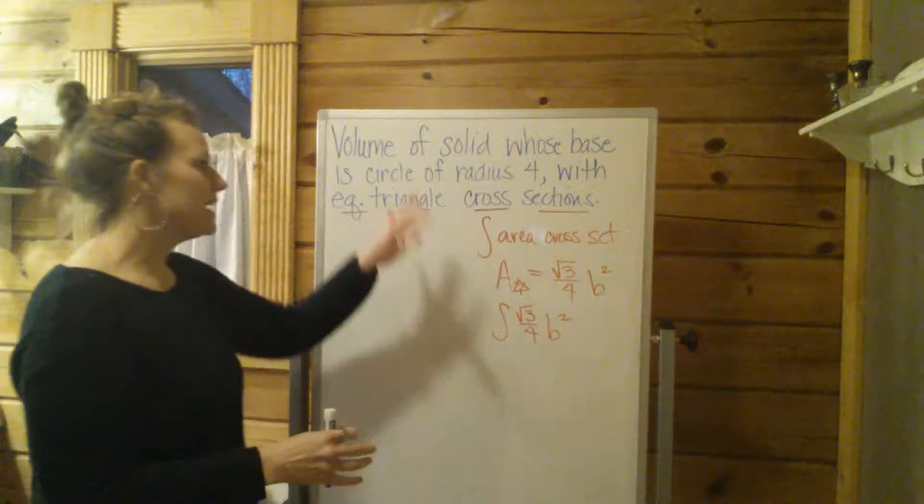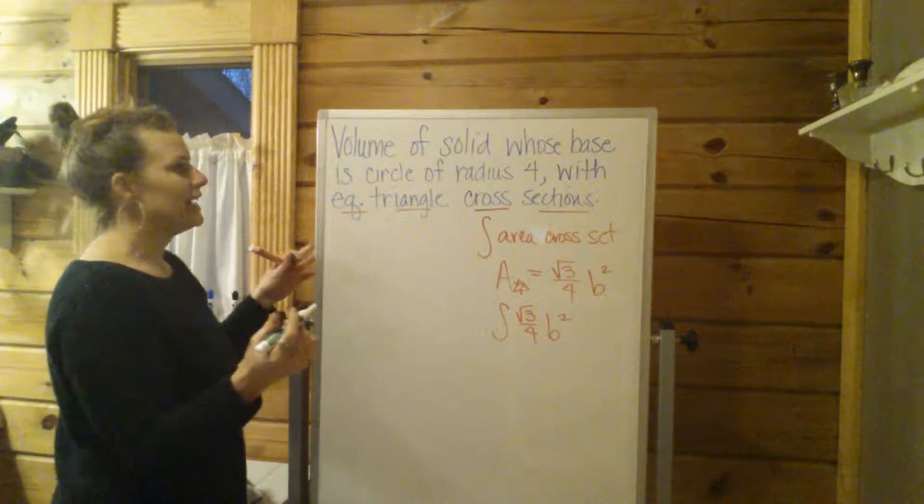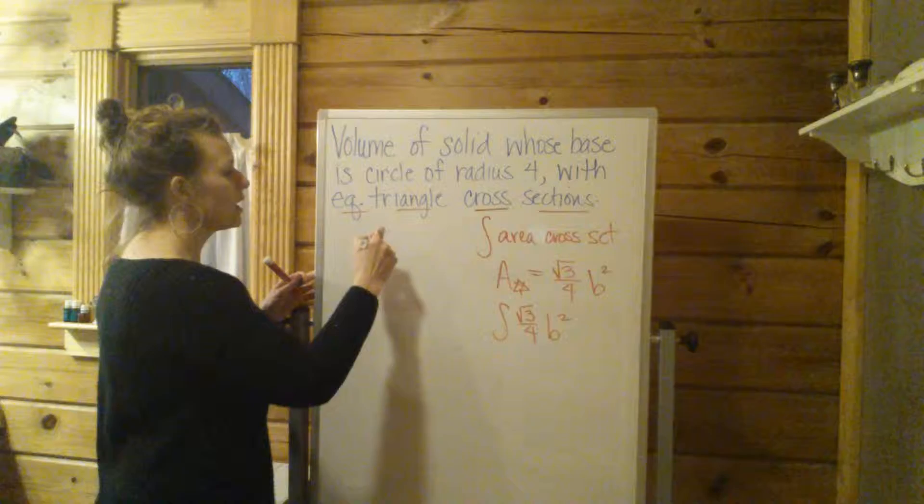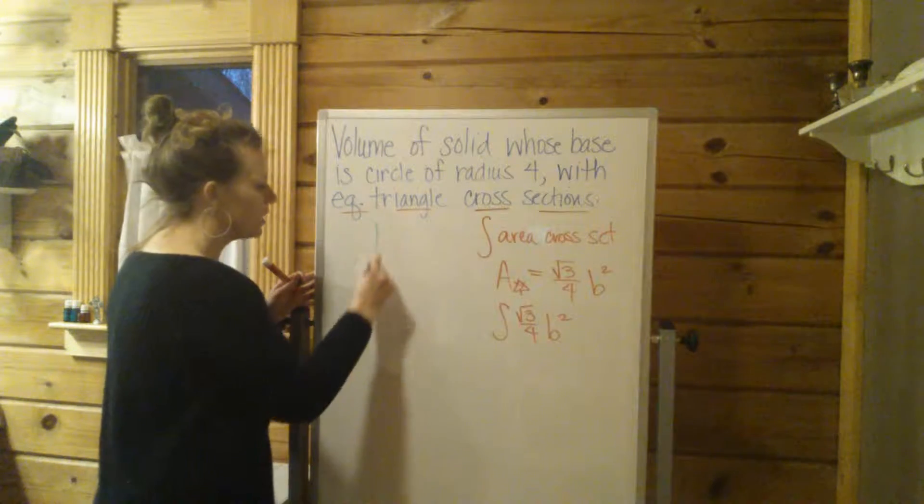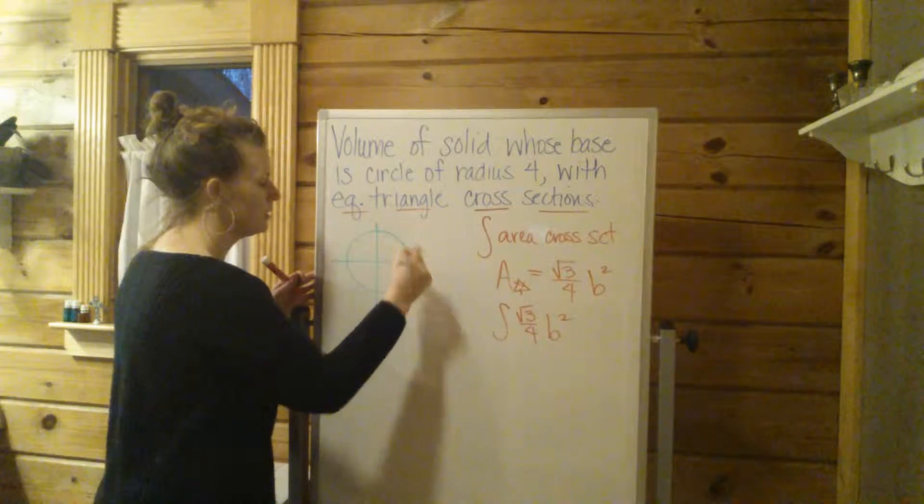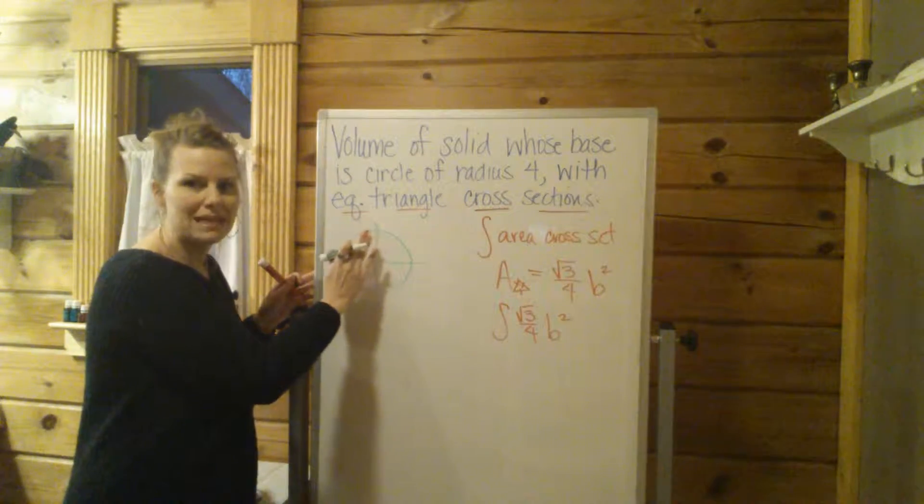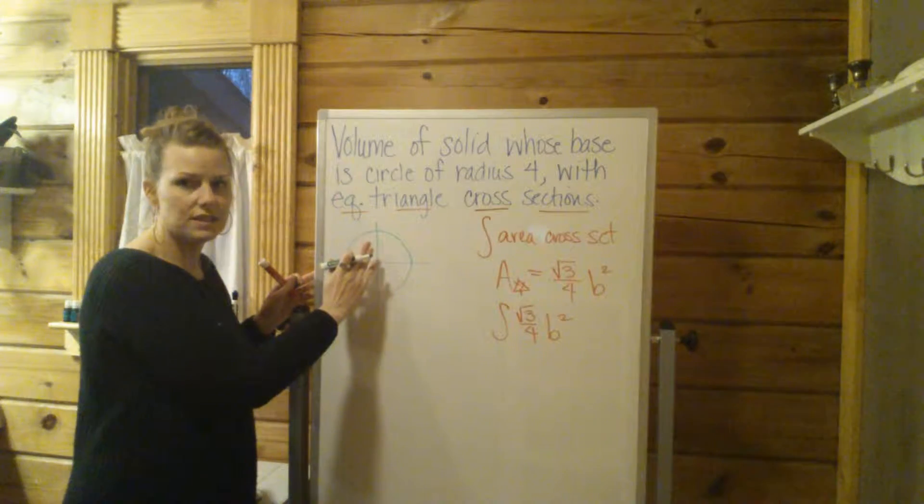Now we have to take into consideration the base of this solid. They're saying it's a circle with radius 4. So I'm going to draw that out on a graph. So that is the floor. That's the base of my solid. So that's like the floor of the solid.